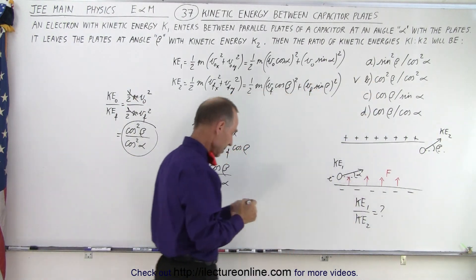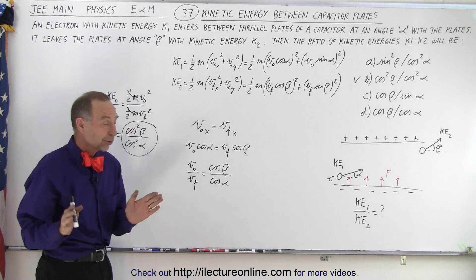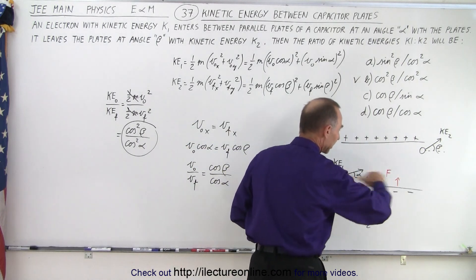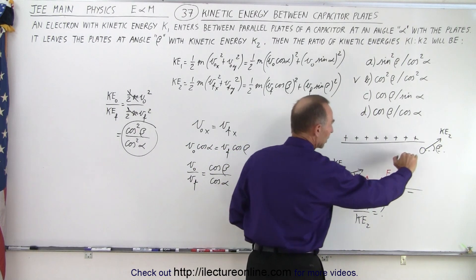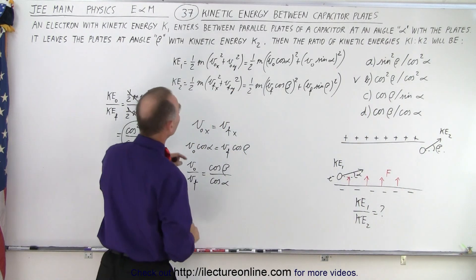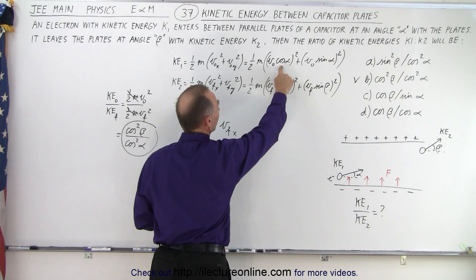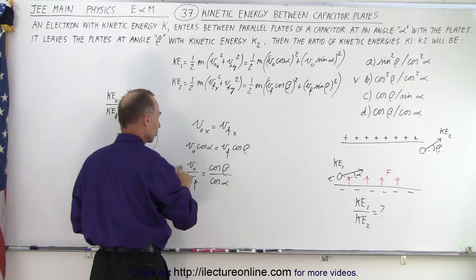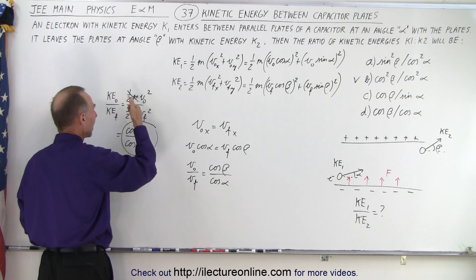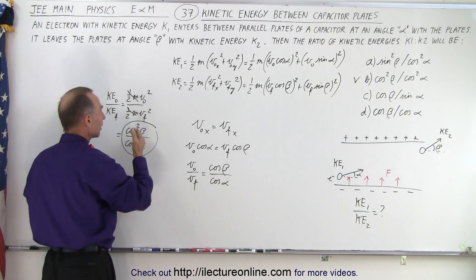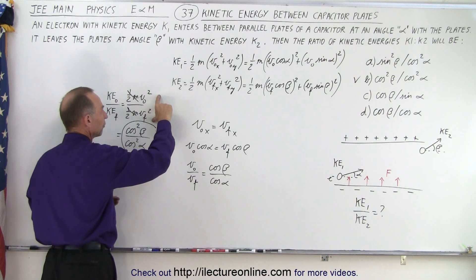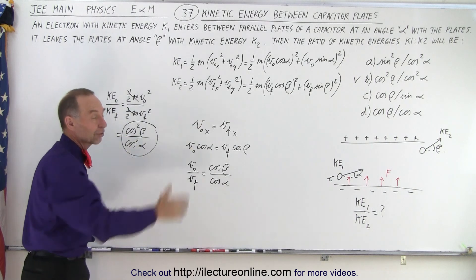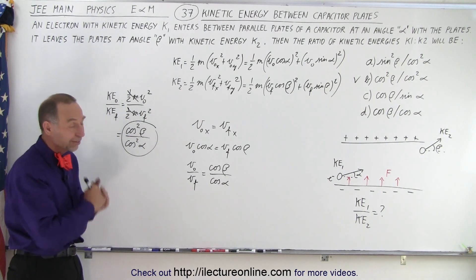I would go with answer B. The trick was to realize that the force only acts in the y-direction — not in the x-direction — so the x-component of velocity is conserved. That gives us the ratio v_initial/v_final = cos β/cos α. Since kinetic energy is ½mv², we cancel the ½m's and square the velocity ratio, giving K1/K2 = cos²β / cos²α. That's answer B, and that is how it's done.